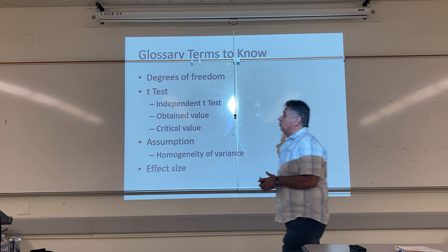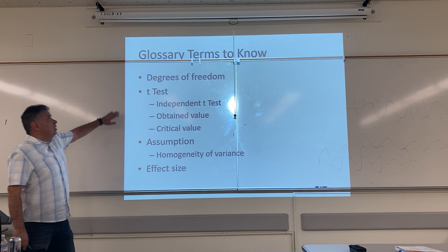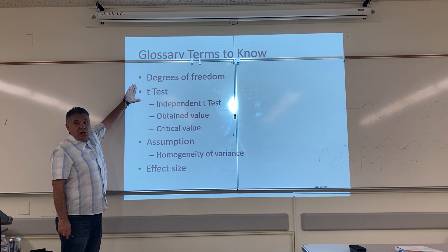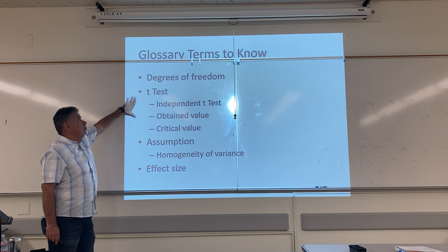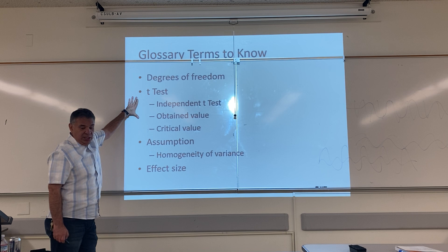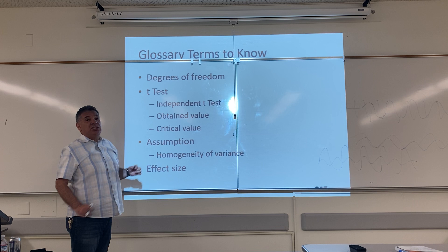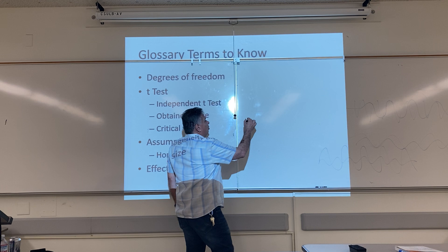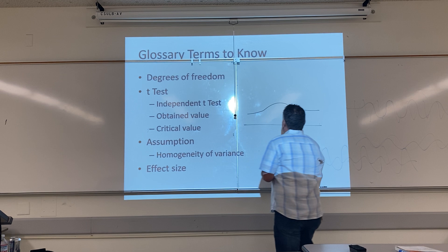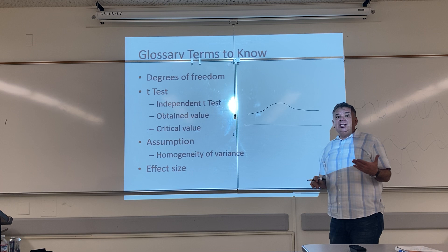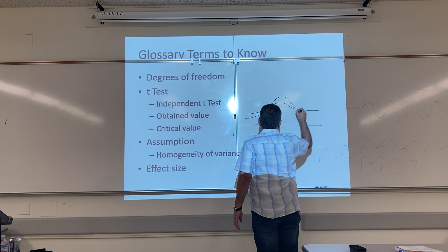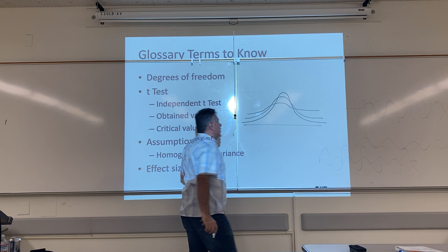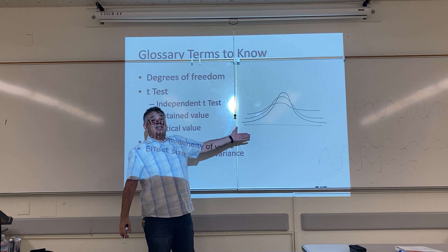We're at our glossary terms. What did we learn today? We learned the independent sample t-test. We talked about degrees of freedom — they approximate the sample size and are different for every statistical test. The t-test uses the t-distribution, which is different than the normal curve. The t-distribution changes shape based on your sample size: when sample size is small, the hump is smaller and the tails are thicker. As degrees of freedom get bigger, the shape of the curve changes, and with infinite degrees of freedom the distribution becomes the normal curve.